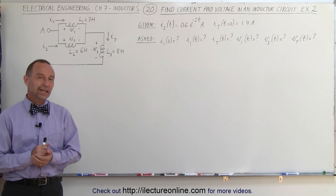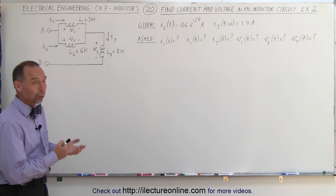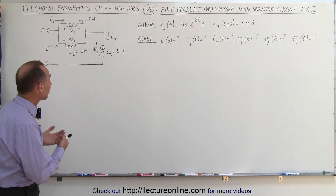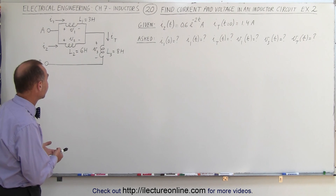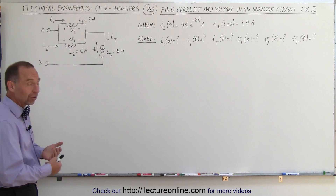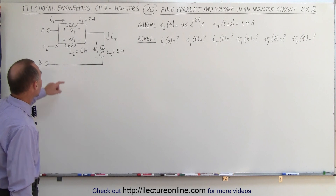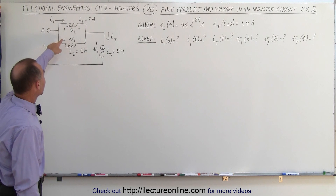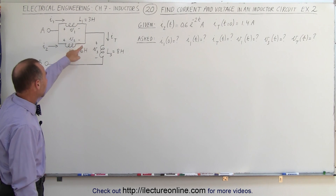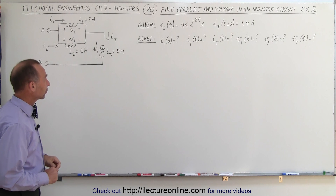Welcome to ElectronLine. Here's another example of how to find the currents and the voltages in an inductor circuit. It's a very simple circuit, but yet there's a lot of work to be done. We're given two inductors in parallel, and that parallel branch is in series with a third inductor.